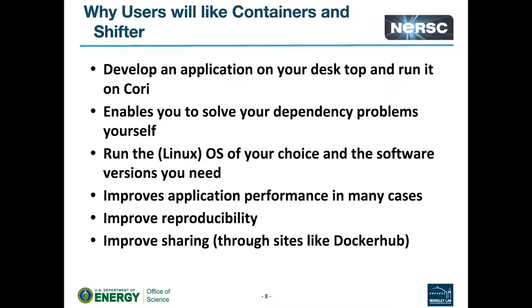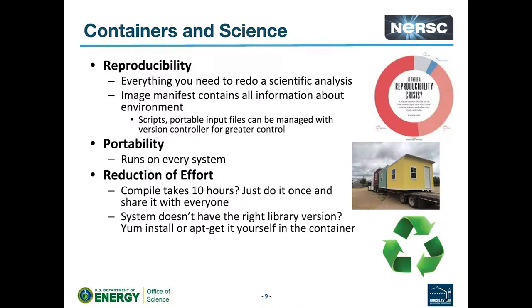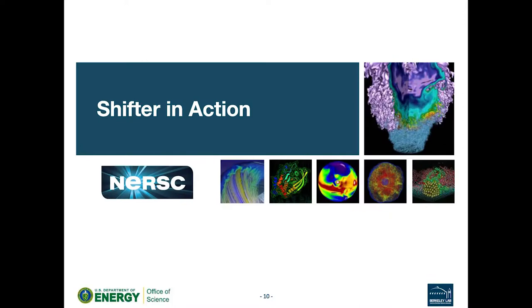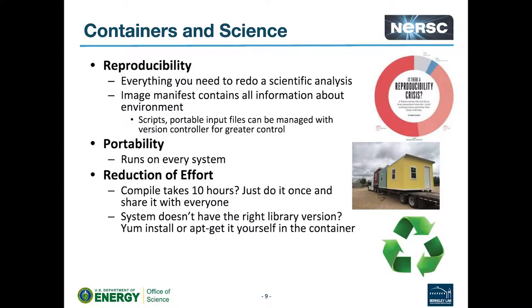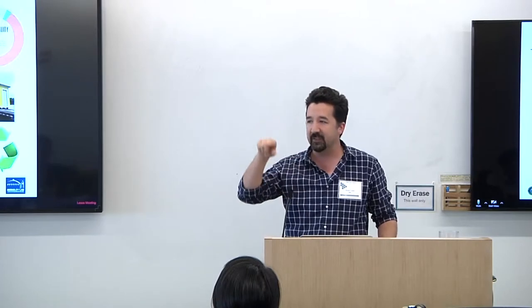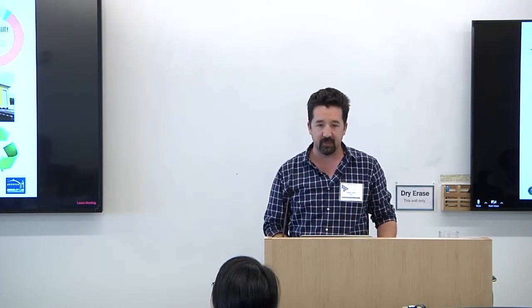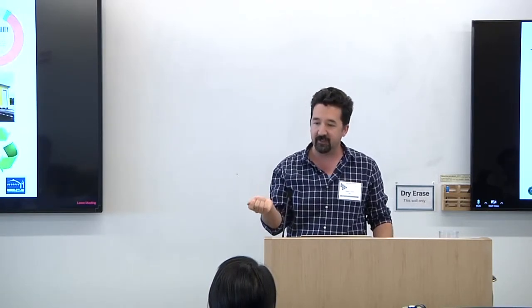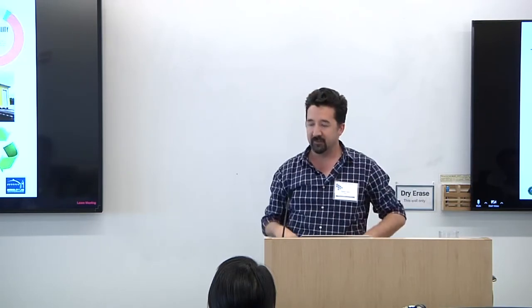Reproducibility: your whole build is in a Dockerfile and you can share the whole stack with other people. Portability: it runs wherever you can run Shifter. Reduction of effort: if a compile takes 10 hours, just do it once and share it — instead of everybody in your group rebuilding the application, you just give them the name of the Shifter image. Also, if a library isn't on the native system, you can put it in your container. One thing to note: once you push your image to Shifter, it's baked — you can't get in and do a yum install after the fact. But adding something at the end of the Dockerfile doesn't redo the whole build, so it's not as slow as it sounds.